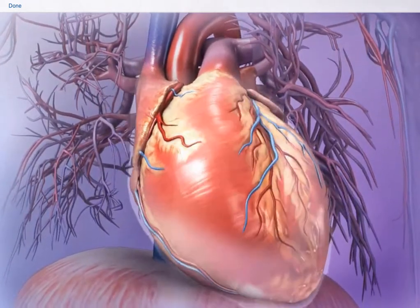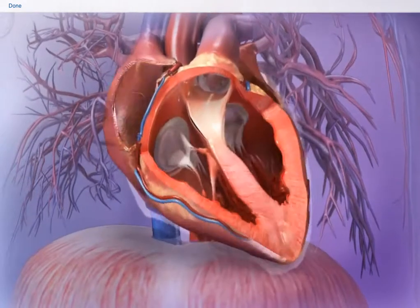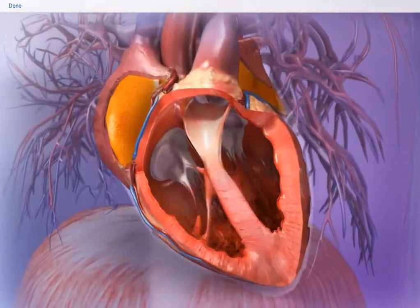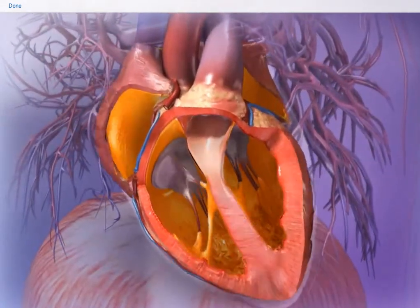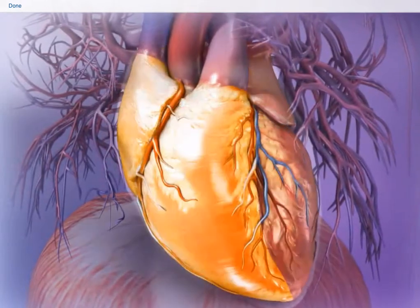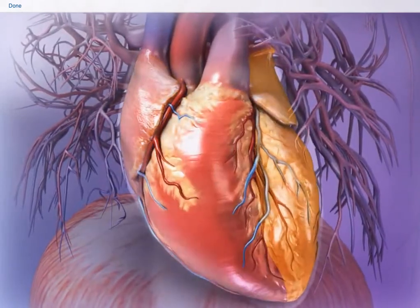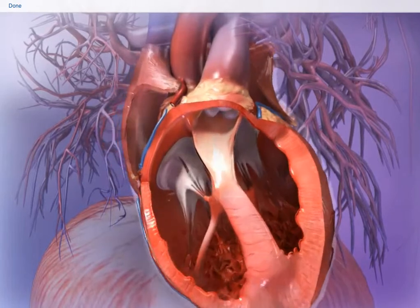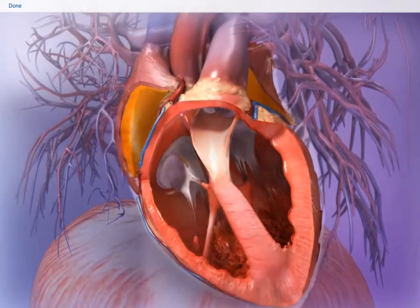The exterior of the heart has a conical shape. The interior of the heart is divided into four hollow chambers, enclosed by a layered wall. The heart has a right and a left side, each side with two chambers, an atrium and a ventricle.